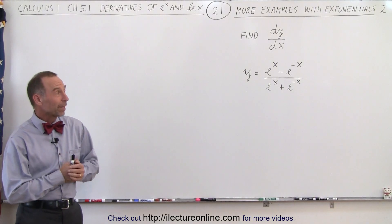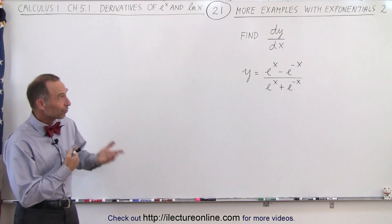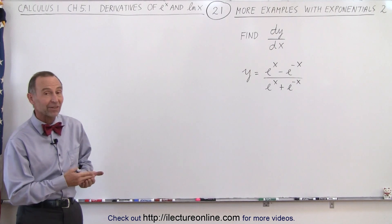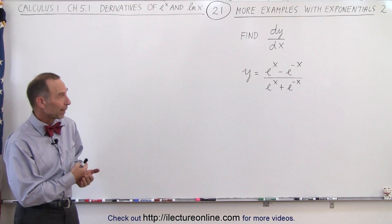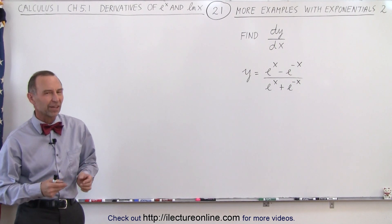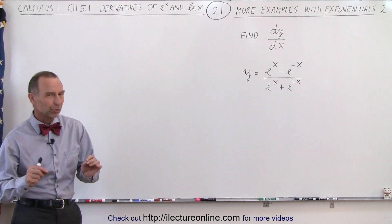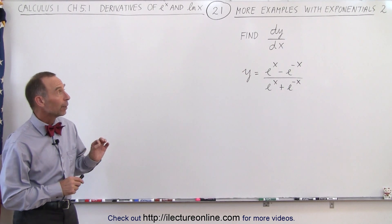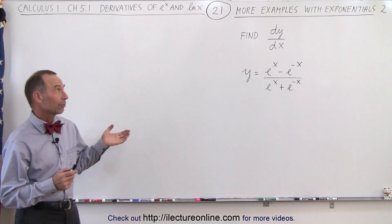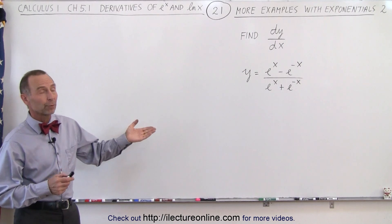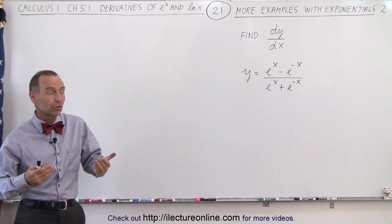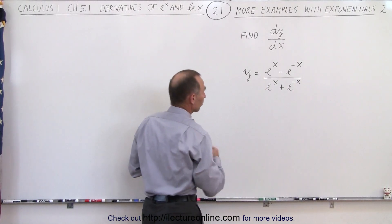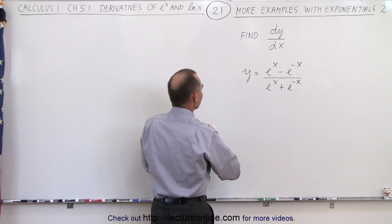Welcome to our lecture online. Now here we have an interesting problem: y equals (eˣ - e⁻ˣ) divided by (eˣ + e⁻ˣ), very much related to the hyperbolic cosine and the hyperbolic sine. All we have to do here is find the derivative with respect to x, and we're going to use the quotient rule because we do have a quotient.